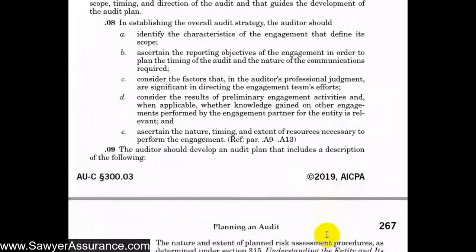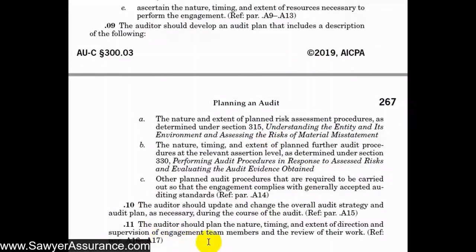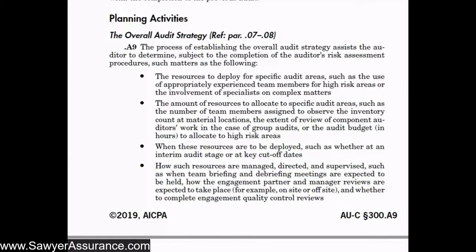We've got some explanatory material here at A9 through A17, so let's take a look at those sections. Now we're down on the explanatory material and we'll first take a look at the overall audit strategy — the forest of the engagement — making sure we understand the reports we're supposed to issue, what financial reporting framework this will be under, what auditing standards apply, so we can organize our engagement and the people we need. Some of the matters we might establish in our audit strategy include resources to deploy for specific audit areas, making sure we've got experienced team members for high-risk areas, or specialists in place for complex matters.